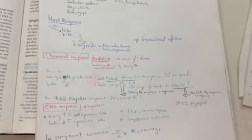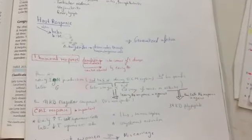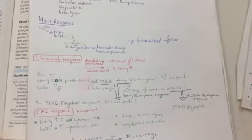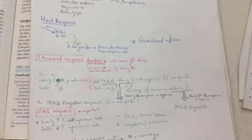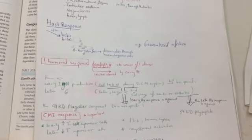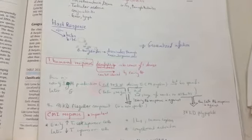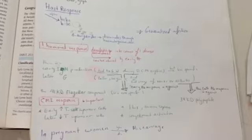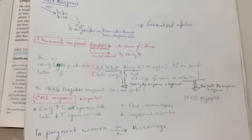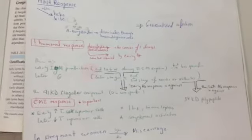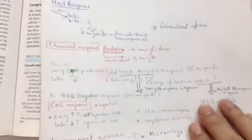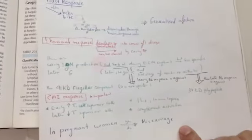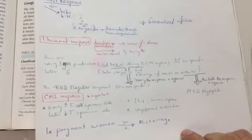The cell-mediated immunity response is important. Early, there is stimulation of T-suppressor cells, but later there is suppression of T-suppressor cells. There is interleukin-1 and immune complexes and complement activation. There is a note: in pregnant woman, Lyme disease causes miscarriage. And this is the host response to the Lyme disease, humoral response, cell-mediated response.